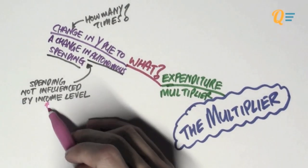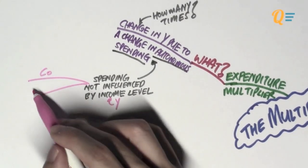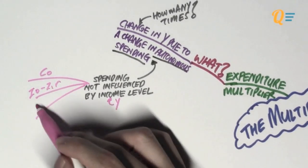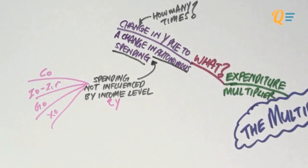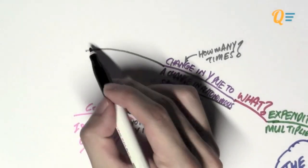I think you already know what is autonomous spending from the previous video, right? So, some examples of autonomous spending could be C0, I0 minus I1R, which is the investment portion, government spending, autonomous exports as well as imports. So, these are examples of autonomous spending.